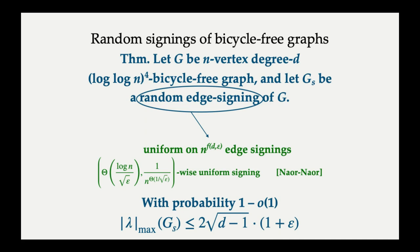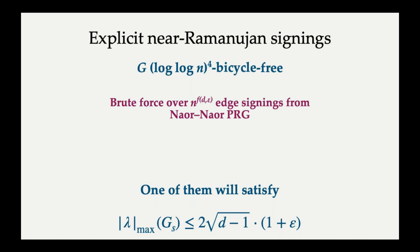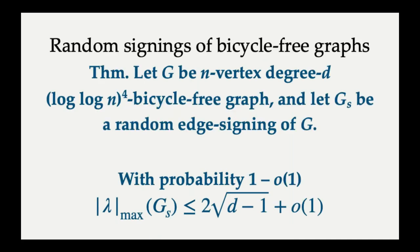And because of that, it's actually possible for us to brute-force search over the space of all possible pseudorandom strings that our PRG could have given us, and check for each one of them whether the lift produced is Ramanujan or not. And since there's only polynomially many strings to check, and since the theorem on the previous slide holds for pseudorandom strings too, we will certainly find one whose largest absolute eigenvalue in magnitude is bounded by the number that we want to bound it by.